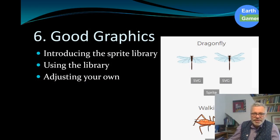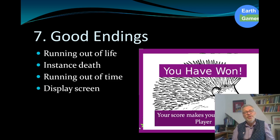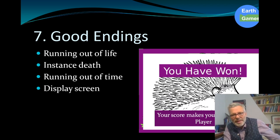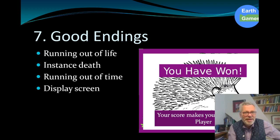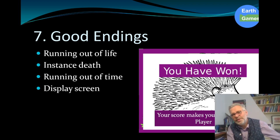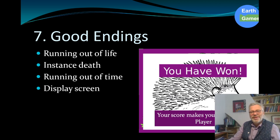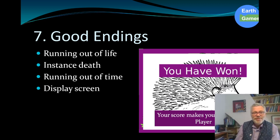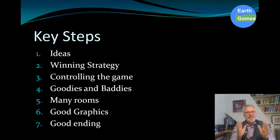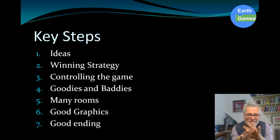The last step — step seven — is good endings. Have a clear splash screen when you win, and give the player their score. You might say 'Excellent' if they're above 500, or 'Do better next time' if they're below 300. You also need screens for when you lose — teaser screens that encourage the player to try again. To recap the seven steps: ideas, winning strategy, controlling the game through variables, goodies and baddies, expanding through many rooms and levels, great graphics, and good endings.